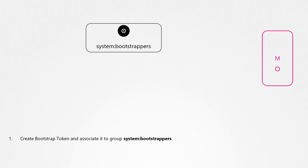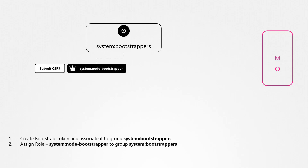If so, wouldn't that be a security risk, since we plan to distribute this token to all new worker nodes? Well, the token does not have any permission to start with, so you must assign a role to it for it to have enough permissions to make certain API calls. A default cluster role exists for this purpose known as the system node bootstrapper role. This gives just enough permissions for the Kubelet to submit a certificate signing request to the API server.